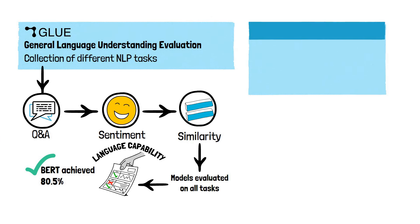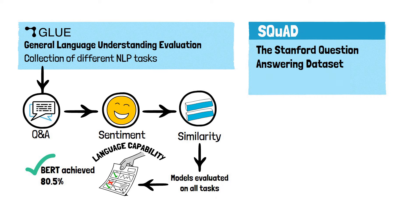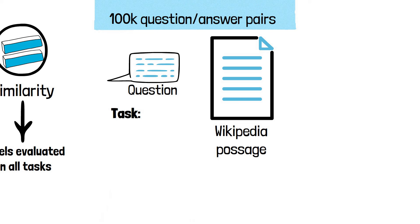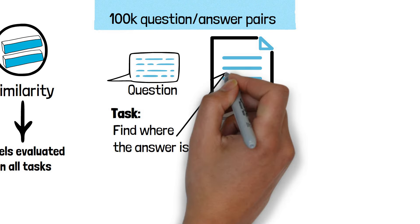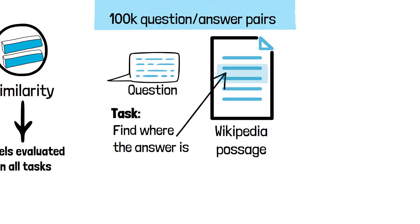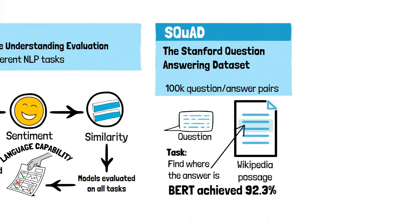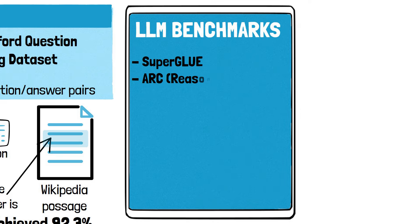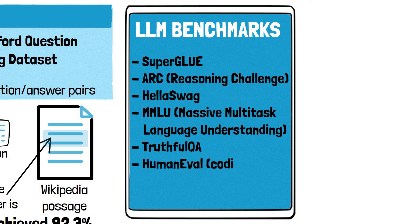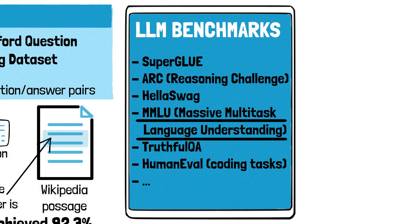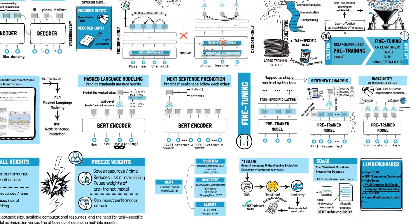Another benchmark used to evaluate BERT was SQuAD, which contains 100,000 crowdsourced question-answer pairs. Given a question and a passage from Wikipedia containing the answer, the task is to predict correctly which part of the Wikipedia passage contains the answer. BERT achieved a score of 92.3% on SQuAD. Since the publication of BERT, we've seen more and more benchmarks for assessing language models. A notable one still used today to assess all major models is MMLU — Massive Multitask Language Understanding — which provides a wide range of specific tasks for deeper insights into a model's capabilities.